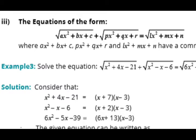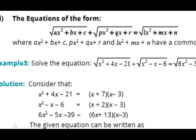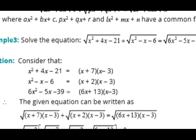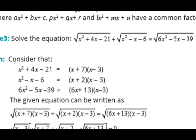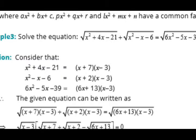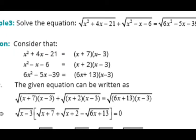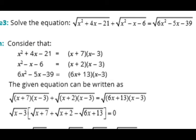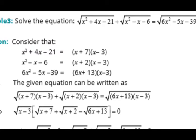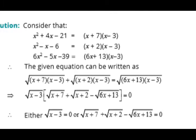In the previous question all values under the radicals were linear; in this question all values are quadratic. We first factorize all the quadratic expressions: x² + 4x − 21 factors as (x + 7)(x − 3); x² − x − 6 factors as (x + 2)(x − 3); and 6x² − 5x − 39 factors as (6x + 13)(x − 3). We then rewrite the given equation using these factors and find that (x − 3) is a common factor in all three radical expressions, so we factor it out.